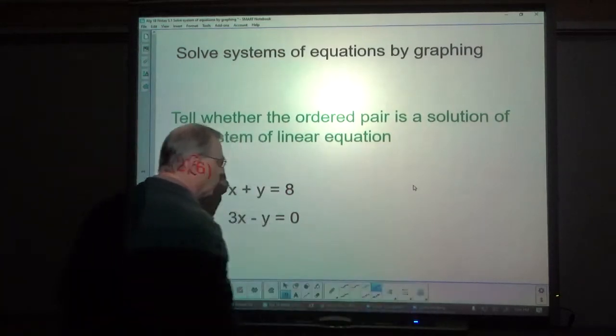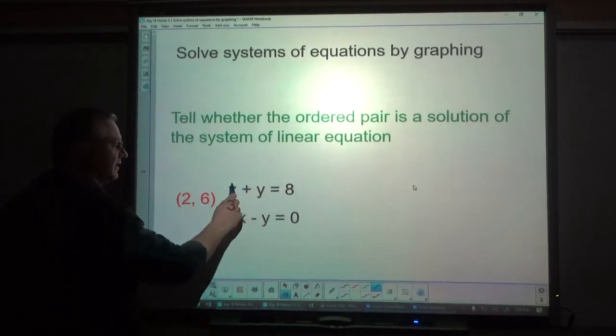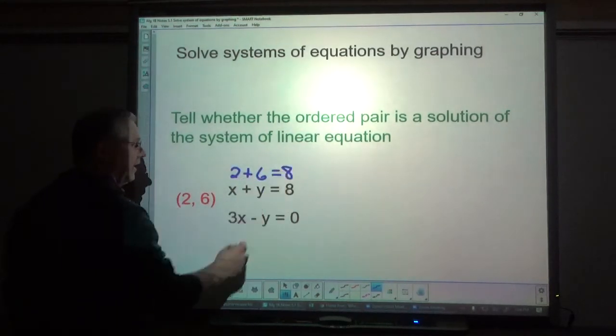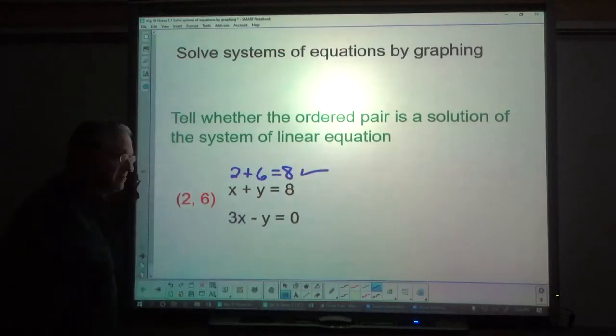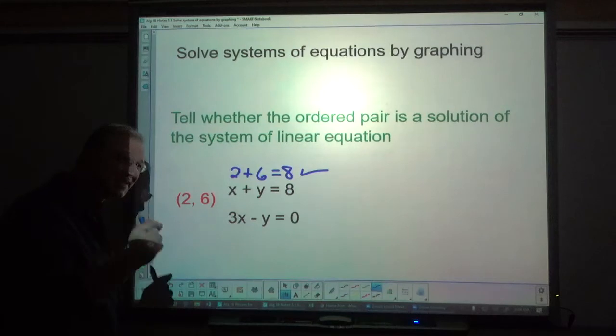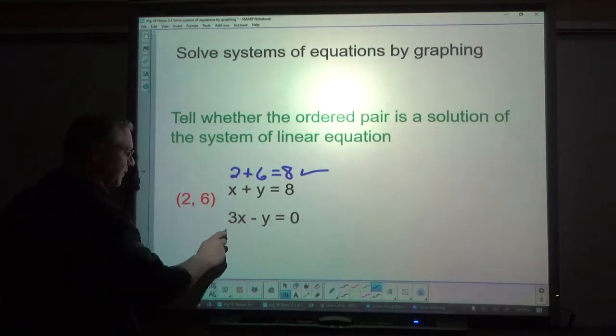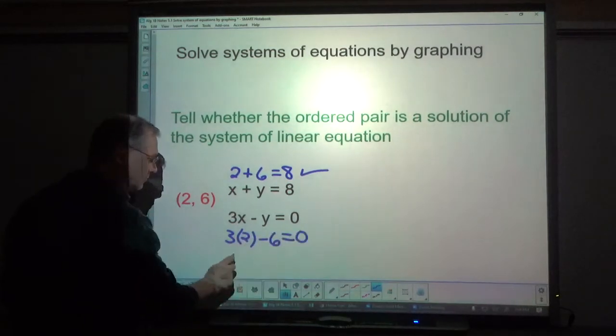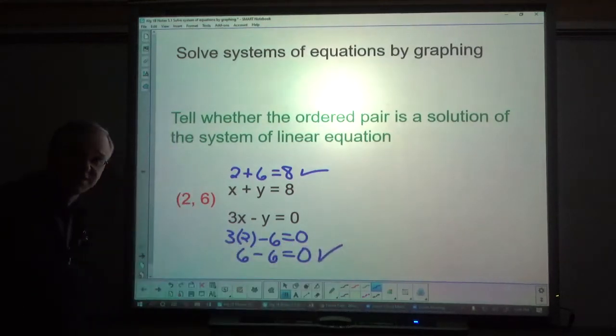So the way you go about that is you take the x and the y and you plug it in. I'm going to do it above and below for this one. So 2 plus 6, and is that true? Is 2 plus 6 equal to 8? Yes it is. Now we have to test it in both. It has to be a yes in both, true in both, for it to work. 3 times 2 minus 6 equals 0. So 6 minus 6 equals 0. Is that true? Yes it is.